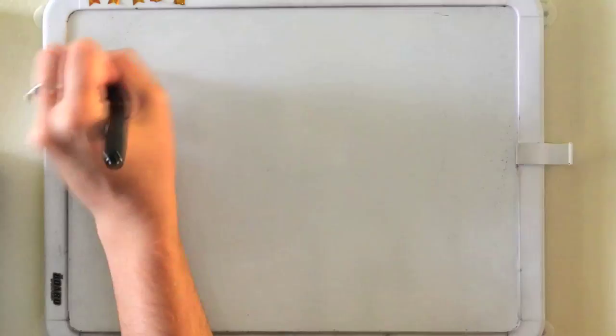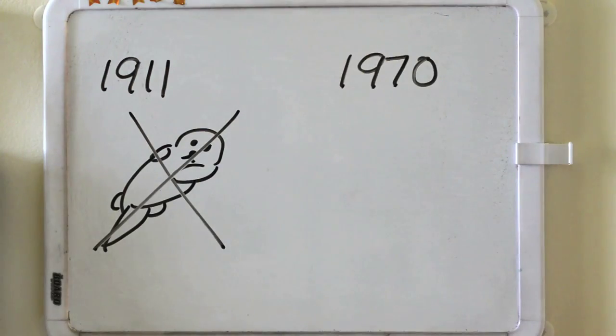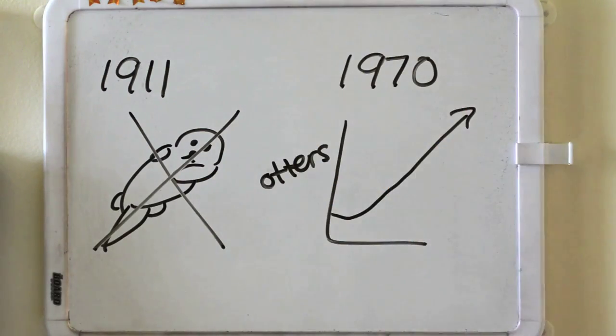In 1911, otters had almost been hunted to extinction, but when international treaties protected the otter, they were able to recover by the 1970s.